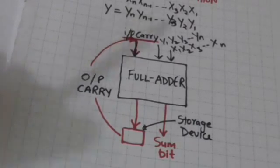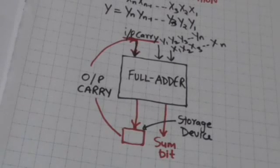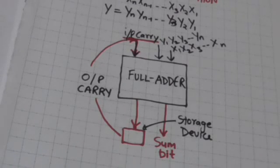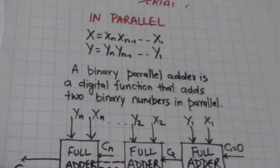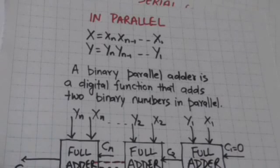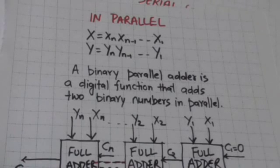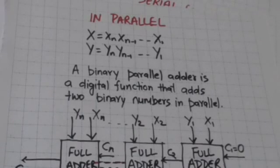In this way we can add two n-bit binary numbers in serial fashion using one full adder. To add two binary numbers X and Y of n bits in parallel, we need a binary parallel adder. A binary parallel adder is a digital function that adds two binary numbers in parallel.